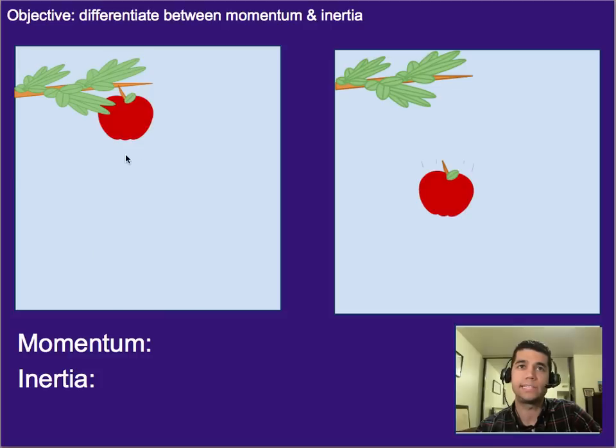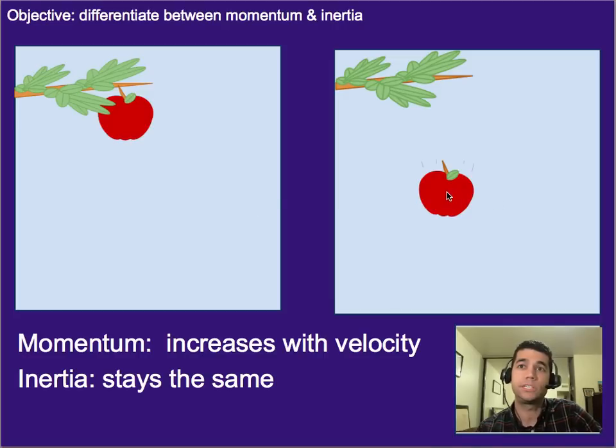As the apple begins to go faster and faster, its momentum increases with velocity, while its inertia stays the same because its mass is the same. We're looking at the same apple in both cases.